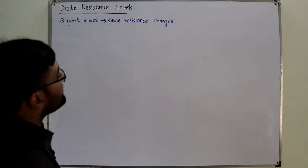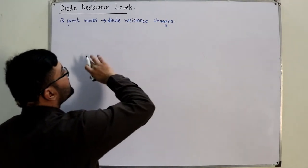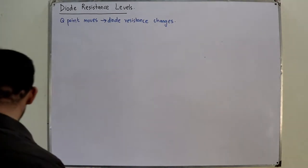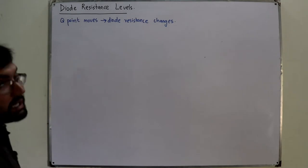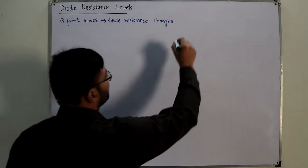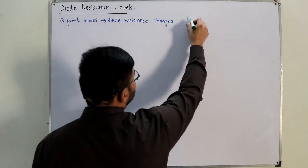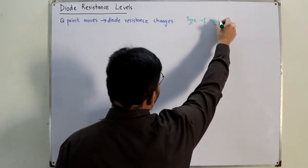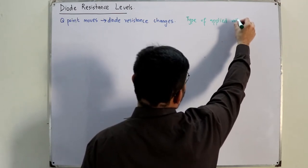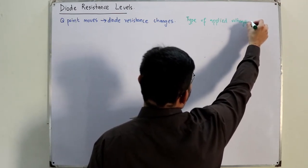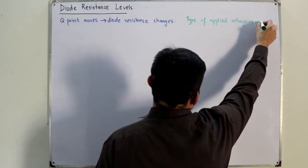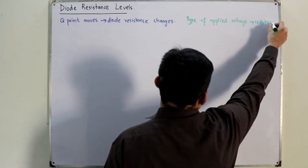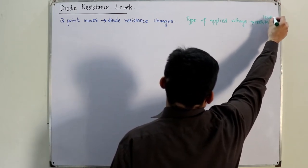The type of the applied voltage will determine the resistance level. We have got different multiple resistance levels, but the type of applied voltage will determine the resistance level.